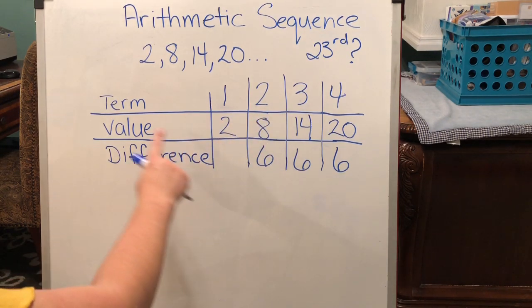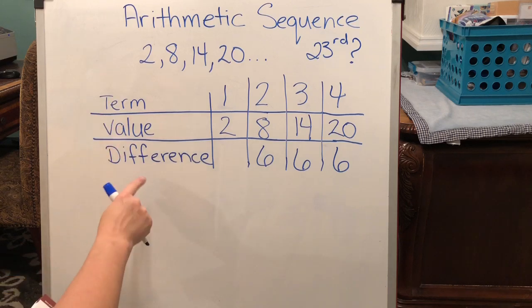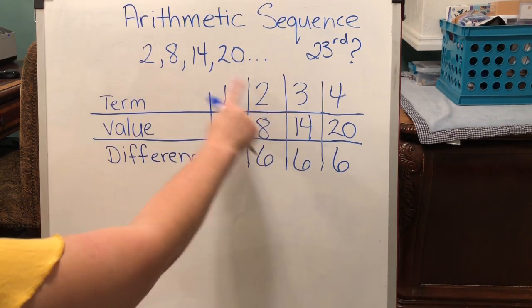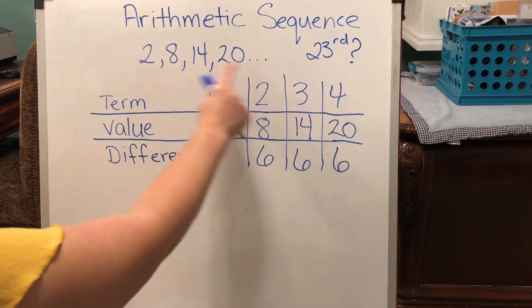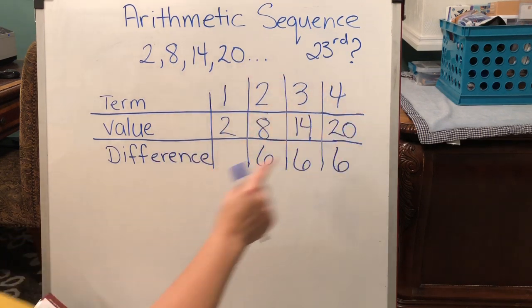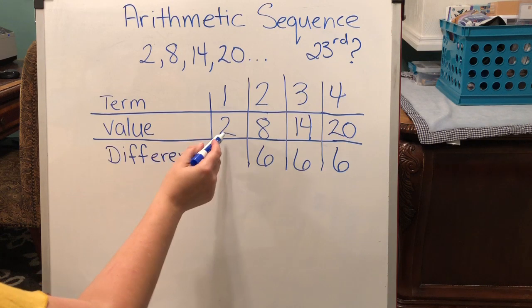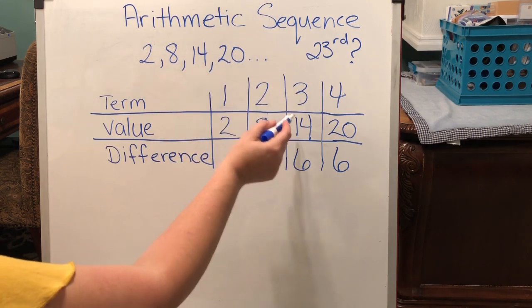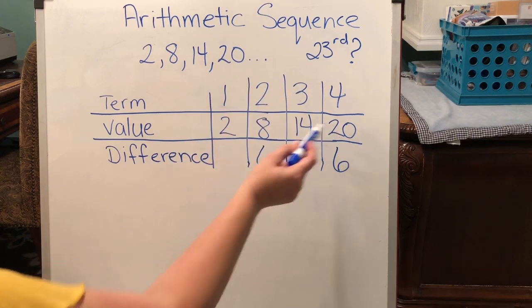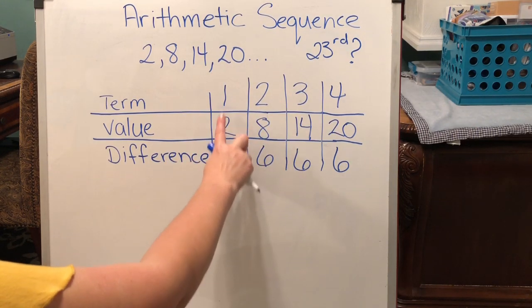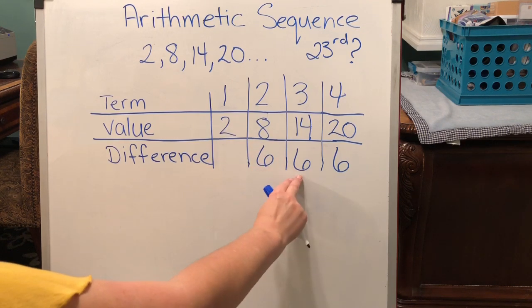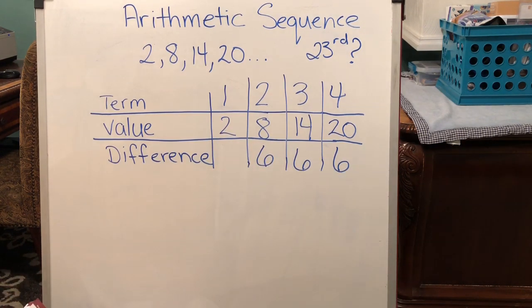So here I have filled out our chart. We have term, value, and difference. This is the first term. This is the second term, third term, fourth term, and so on. For the first term the value is 2. For the second term the value is 8. Third term value 14. Fourth term the value is 20. Now you can see we don't have any difference here because this is where we start. But between the next term it's 6, 6, 6. You can see where it's going.